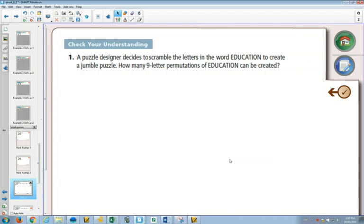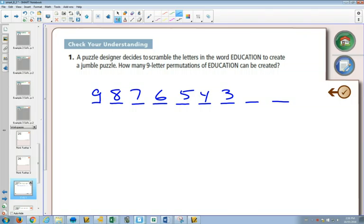Now, if you wanted to make a 9-letter permutation, so you want 9 decisions. 1, 2, 3, 4, 5, 6, 7, 8, 9 decisions. How many letters are in the word education? There is only 9 letters. So how many choices would you have for the first one? 9. Then 8, then 7, then 6, then 5, then 4, then 3, then 2, then 1. And if you recognized this right away, that there was 9 letters and you were going to go from 9 to 1, you could write this as 9 factorial.